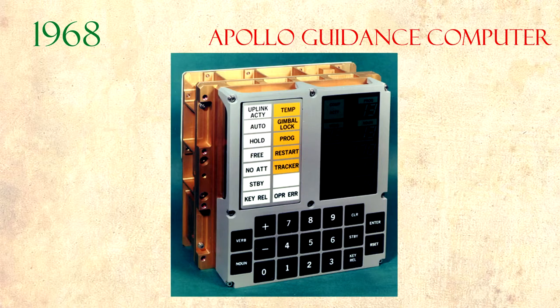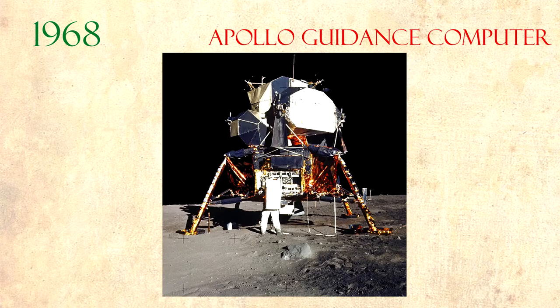In 1968, engineers at MIT's Instrumentation Laboratory created the Apollo Guidance Computer. It was not bigger than 32 kilograms. This device steered the Apollo 11 to the moon one year later.